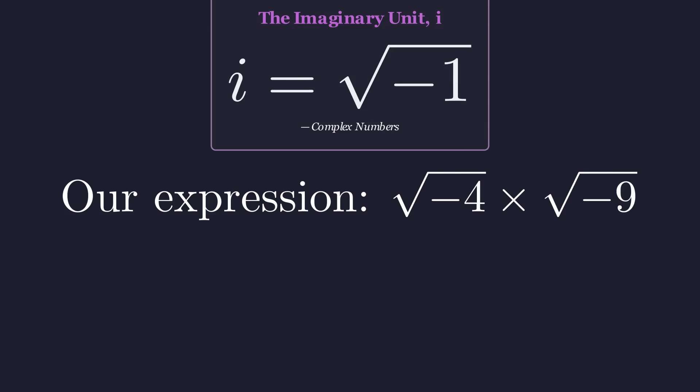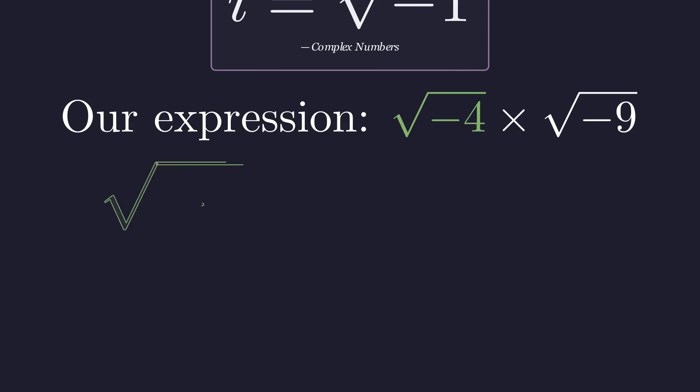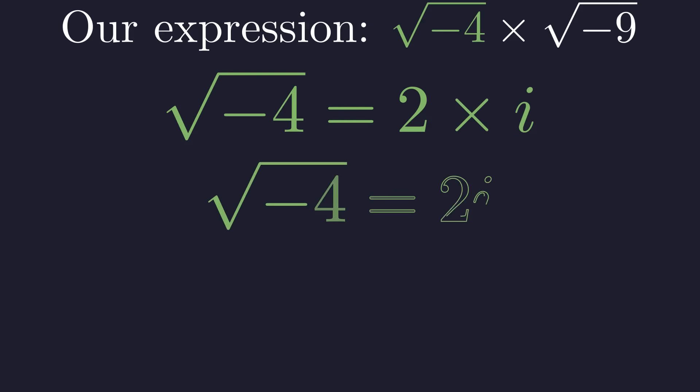Let's re-examine our expression. The correct approach is to simplify each term using i before we multiply. Let's start with the square root of negative 4. We can rewrite negative 4 as 4 times negative 1. Now, since 4 is positive, we can safely use the product rule to split the square root. The square root of 4 is 2 and the square root of negative 1 is i. So, the square root of negative 4 simplifies to 2i.